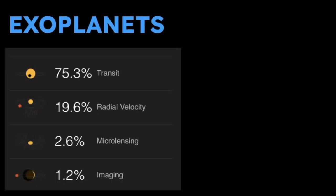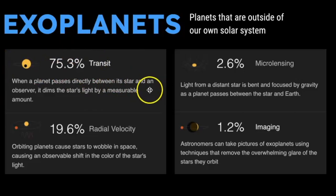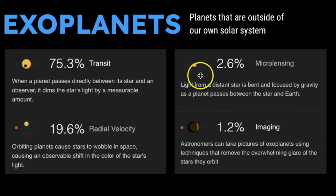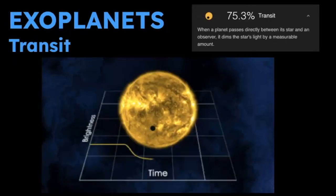There are four different ways astronomers can detect exoplanets. The first and most common method is through transit, when the planet passes in front. We have radial velocity, which measures the wobble of a star due to a planet going around it. There's microlensing, by measuring how light changes when focused by gravity, and then imaging techniques.